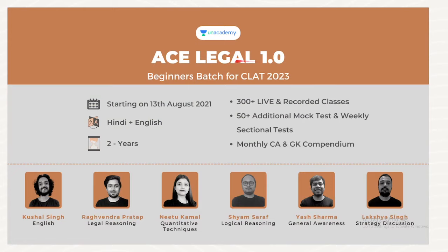Ace Legal 1.2 is a two-year batch — a pre-noted batch for CLAT 2023, starting on 13th of August 2021. You get 300 plus live and recorded classes, 50 plus additional mock tests, weekly sectional tests, and monthly current affairs and GK compendium.